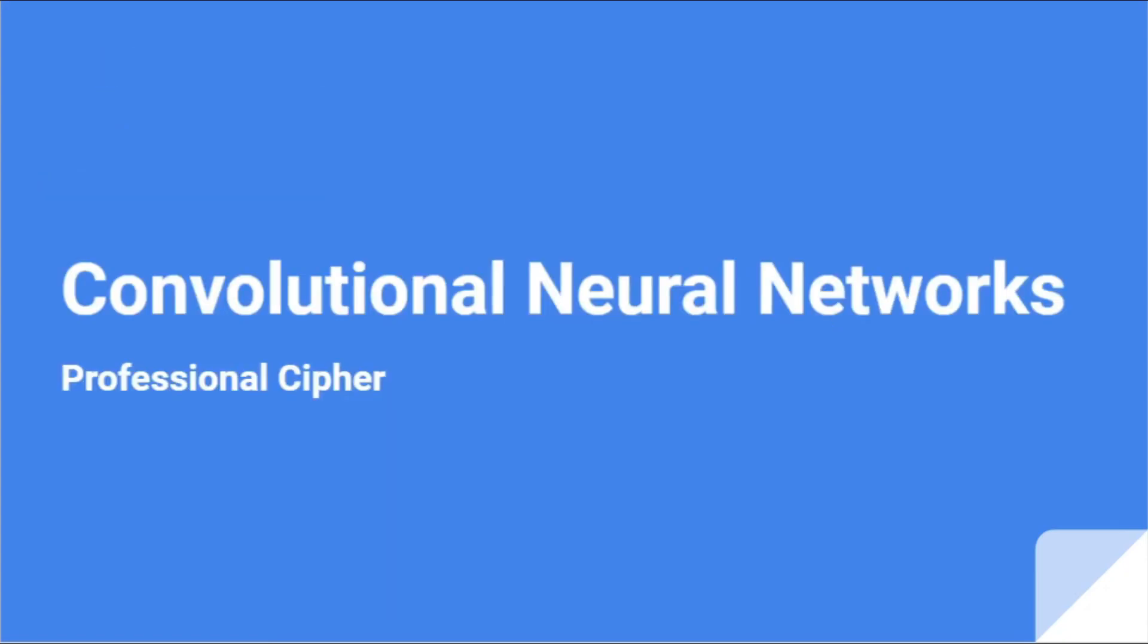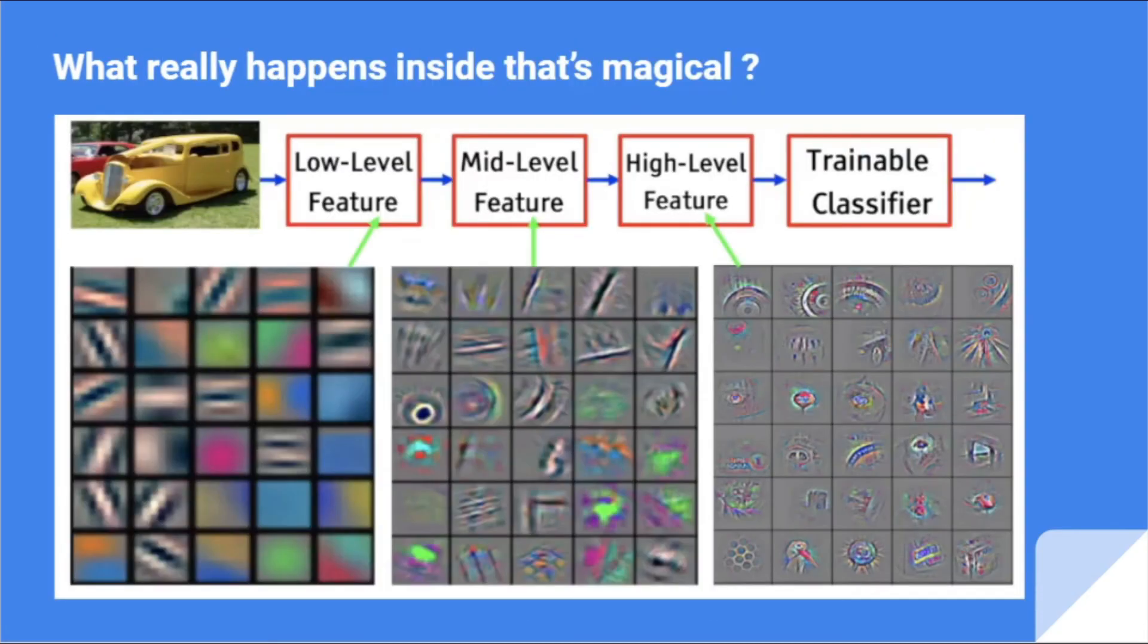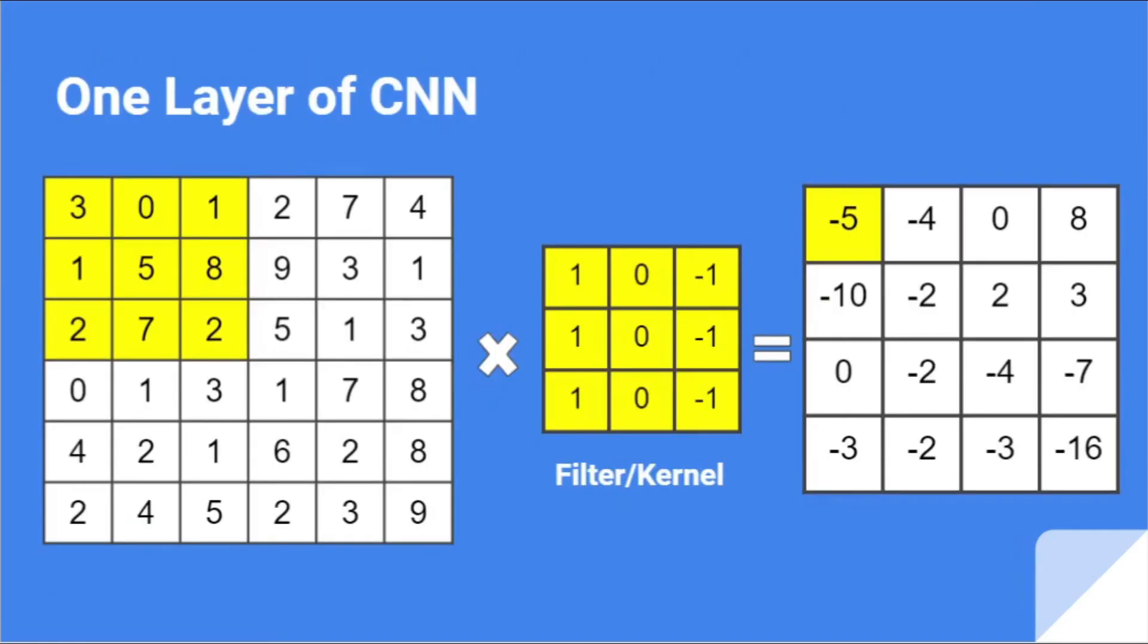Recapping today's convolutional neural network: Why we need CNN? Because of the huge parameters we will be dealing with. Then we understand how an image goes through CNN. Then we understood how each layer works, what's happening, what's the mathematical operation we are doing here. This was an introduction to convolutional neural networks. I hope you found the video useful. Subscribe to Professional Cipher for more. Thank you.